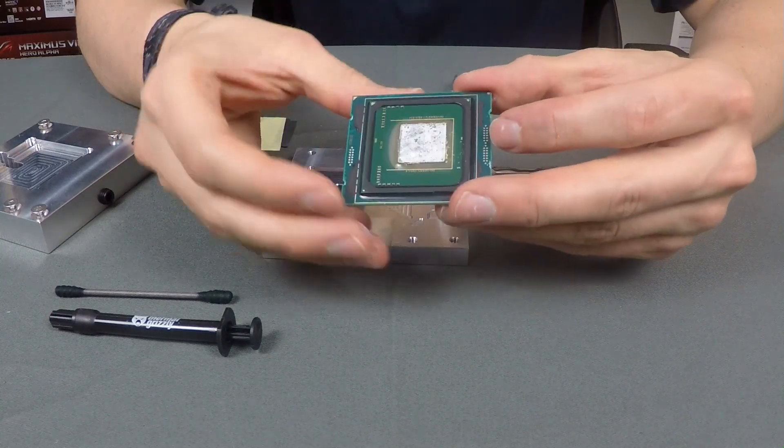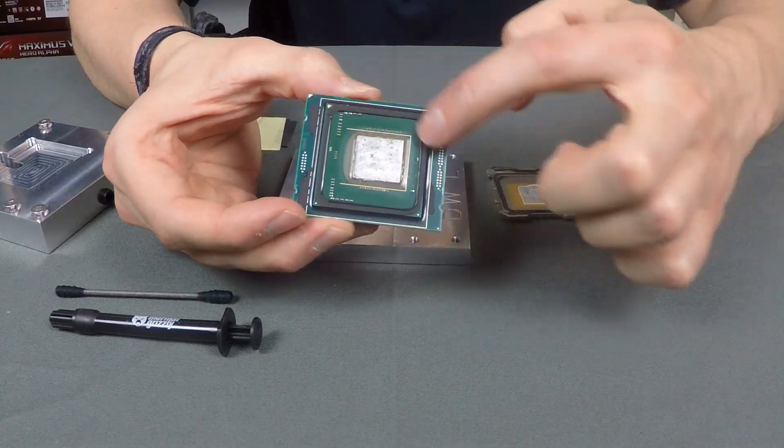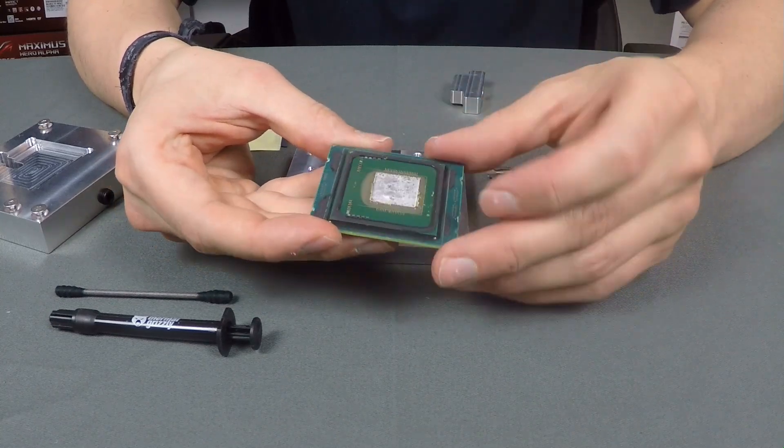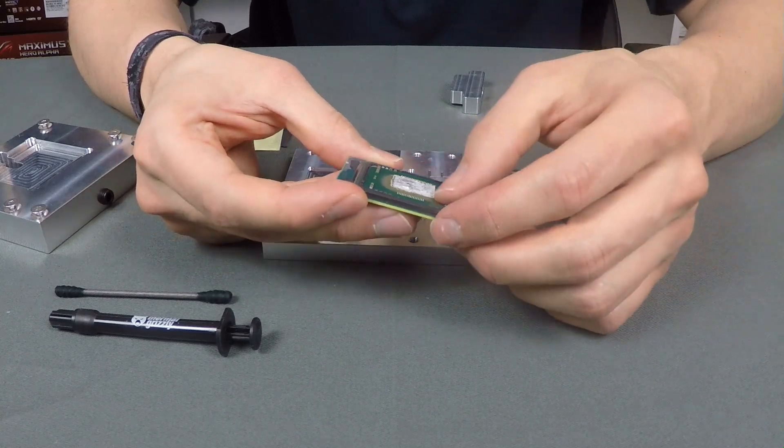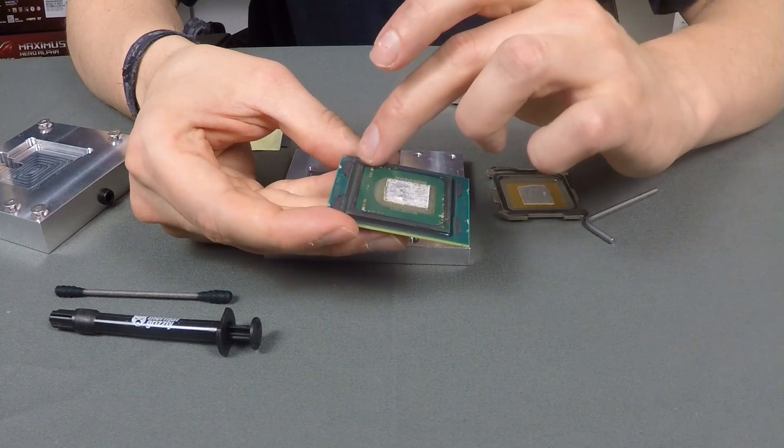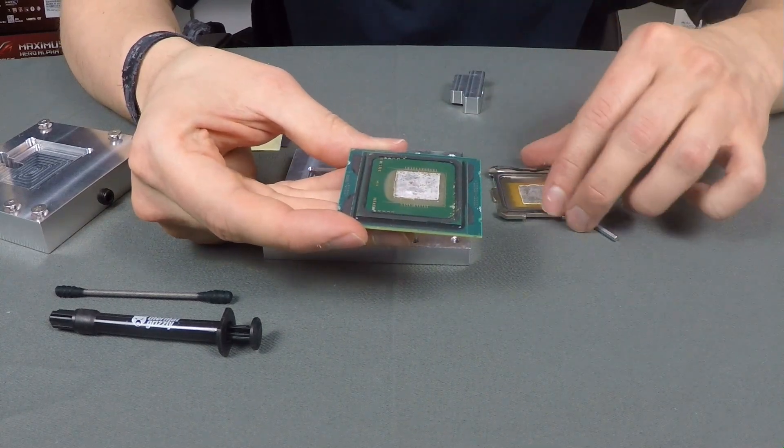So this is the CPU, the delidded Core i7 6950X. You can see there is still the glue around the top PCB, and the middle is covered with the indium solder, and there is a little bit of residue around it. It's probably something which is left from the soldering process.